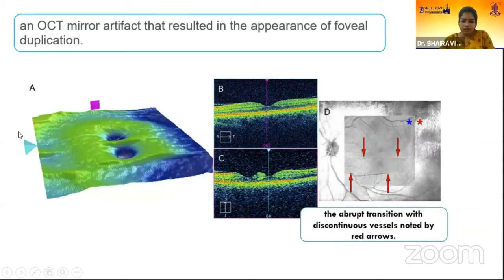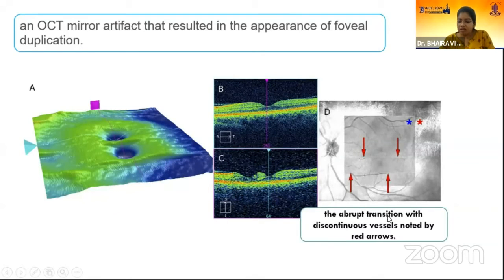Due to the mirror artifact, there is duplication of the fovea. On the en face image, there is an abrupt transition and discontinuation of the vessels, noted by the red arrows.